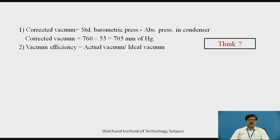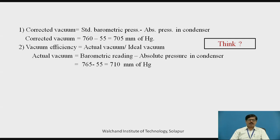Now let us see how to find vacuum efficiency. Vacuum efficiency is the ratio of actual vacuum to ideal vacuum. Actual vacuum in the condenser is given by barometric reading minus absolute pressure in the condenser, that is 765 mmHg minus 55 mmHg, which gives us actual vacuum equal to 710 mmHg.